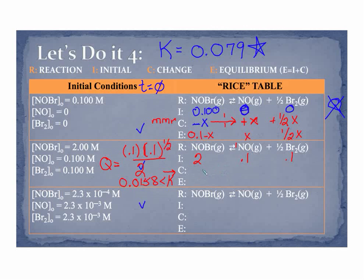So that means it's going to, it needs more products. Q isn't big enough. To get to K, I need to increase products, which means I will consume reactant. So that's minus X. Since it's a one-to-one mole ratio, that's plus X. Since it's a one-half to one mole ratio, that's plus one-half X. E is equal to I plus C. So that's 2 minus X. 0.1 plus X. And 0.1 plus one-half X.